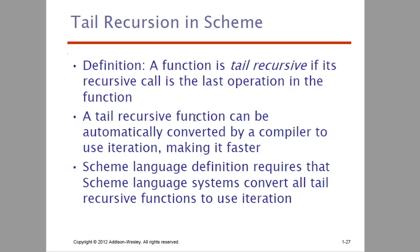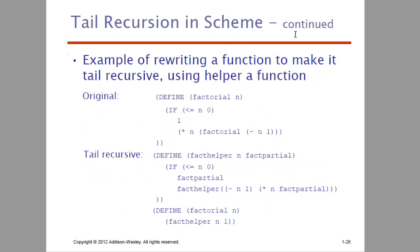A tail recursive function can be automatically converted by a compiler to use iteration, making it faster. The Scheme language definition requires that Scheme systems convert all tail recursive functions to use iteration. In Scheme, we implement tail recursive functions using iteration. For finding the factorial of n, we check whether n is less than or equal to 0 — if so, return 1 — else find n into factorial of n minus 1. The function calls itself again and again, which is recursion. When we convert this to tail recursive, we define an operation using a partial accumulator.